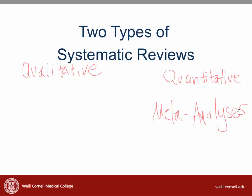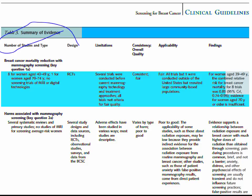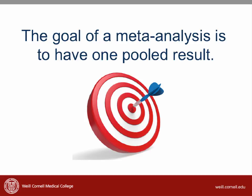Let's look at the mammogram systematic review. In this paper, the authors have an overall summary of the evidence in their table 3. They also have a full listing of papers in an appendix. The authors did do a quantitative meta-analysis of all the data. The purpose of a meta-analysis is to take the results of all the studies and create one pooled estimate of the result.